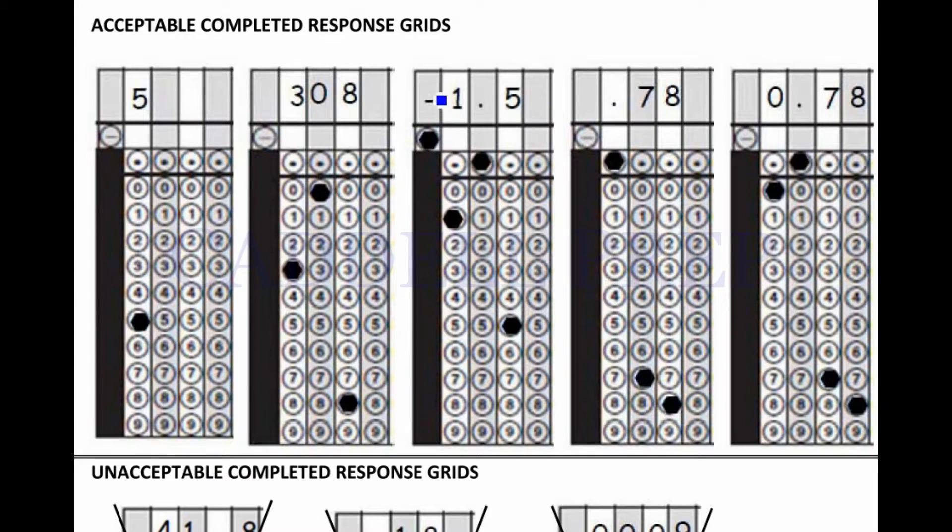It's worth pointing out that an answer can be negative. There is a spot to bubble in a negative. If we get the answer 0.78, we can write 0.78 as shown here.